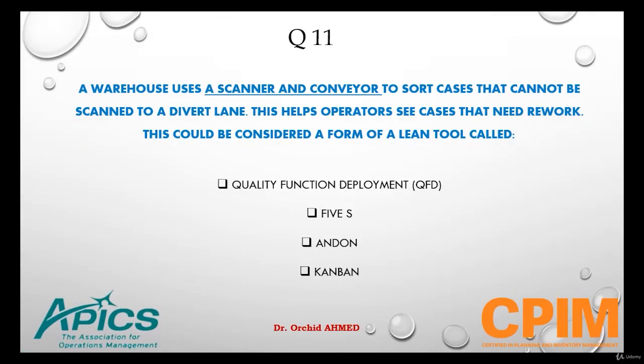Question number 11. A warehouse uses a scanner and conveyor to sort cases that can't be scanned to a divert line. This helps operators see cases that need rework.